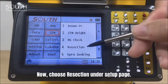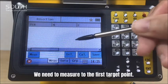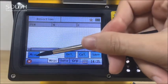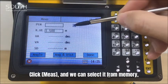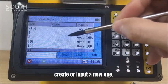Choose the resection under Setup page. We need to measure to the first target point. Click Measure, and we can select it from memory, create or input a new one.